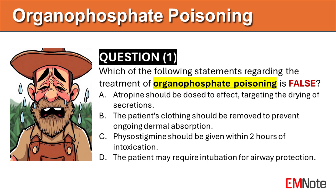Question number 1: Which of the following statements regarding the treatment of organophosphate poisoning is false? The correct answer is C. When treating a patient with organophosphate poisoning, the patient's clothing should be removed to prevent ongoing dermal absorption, atropine should be dosed to effect targeting the drying of secretions, and the patient may require intubation for airway protection.